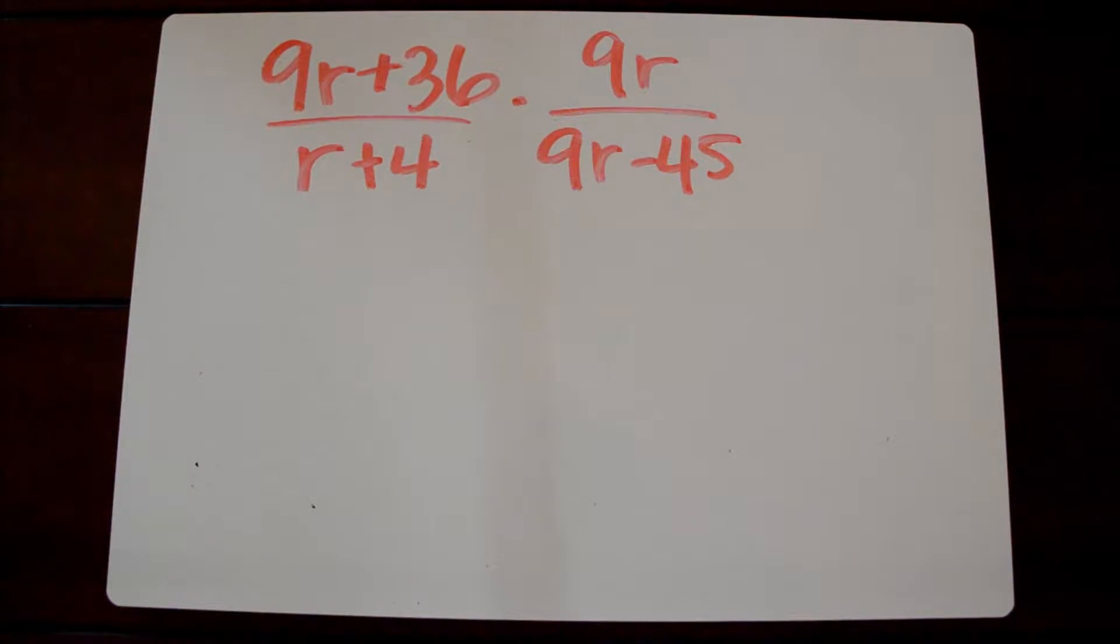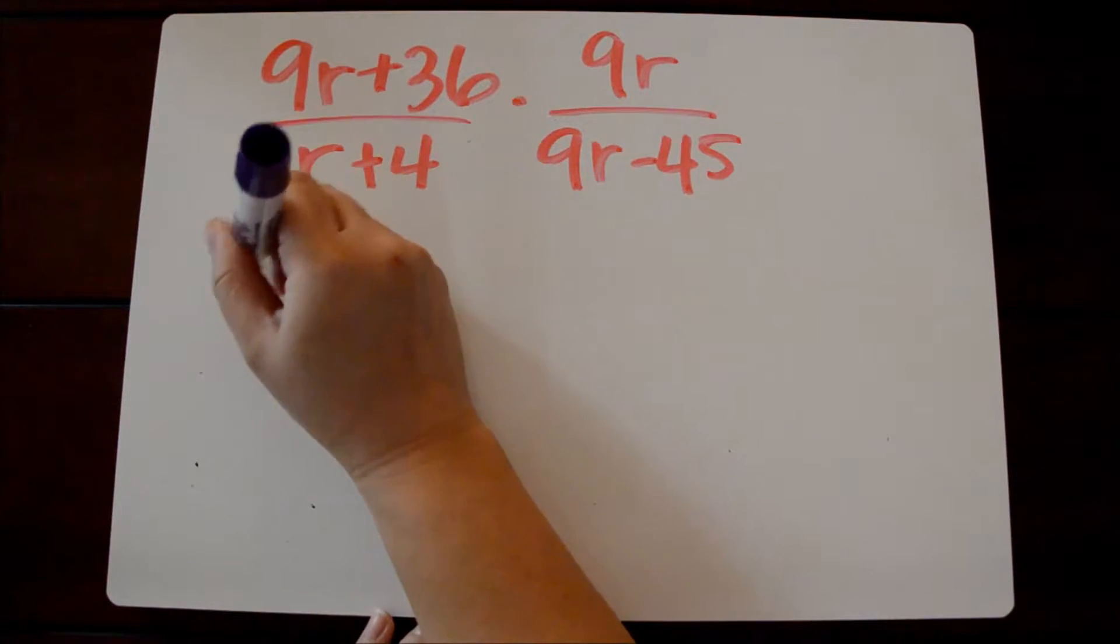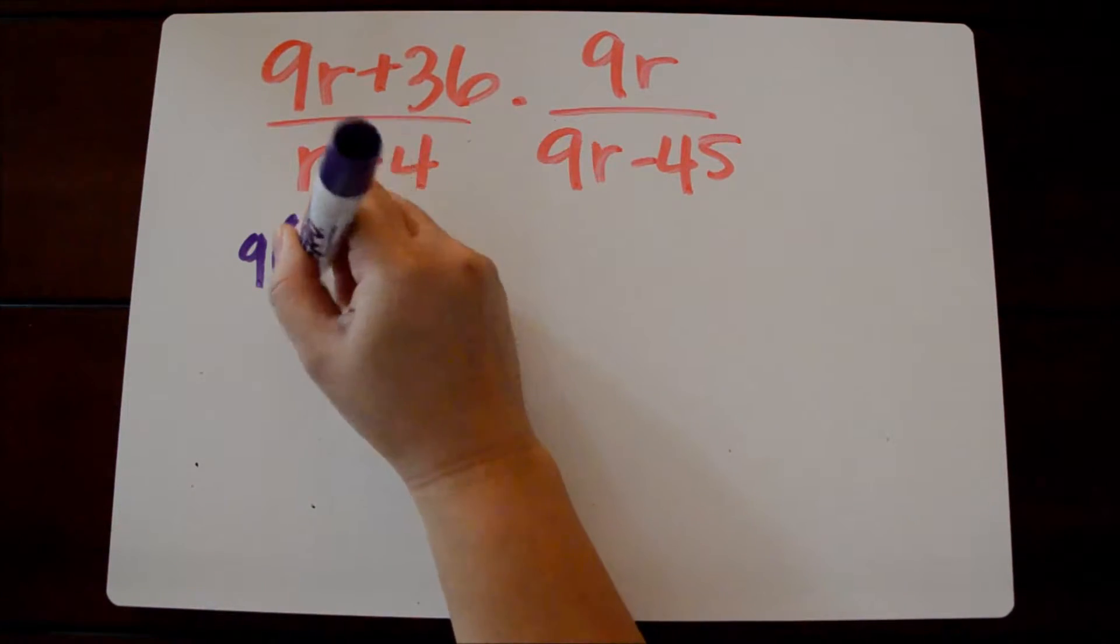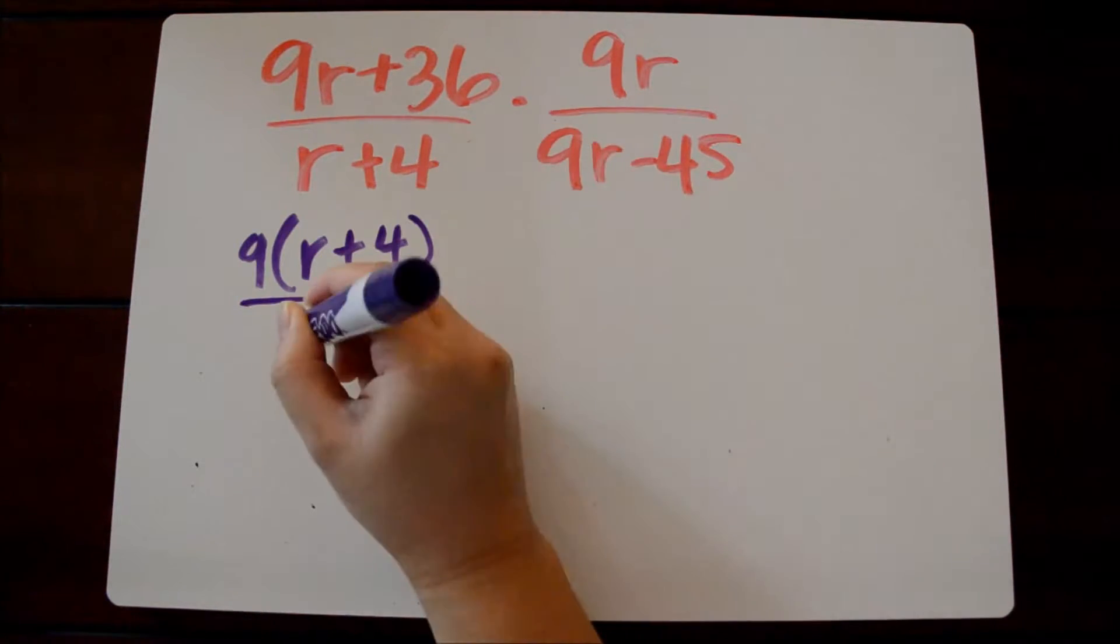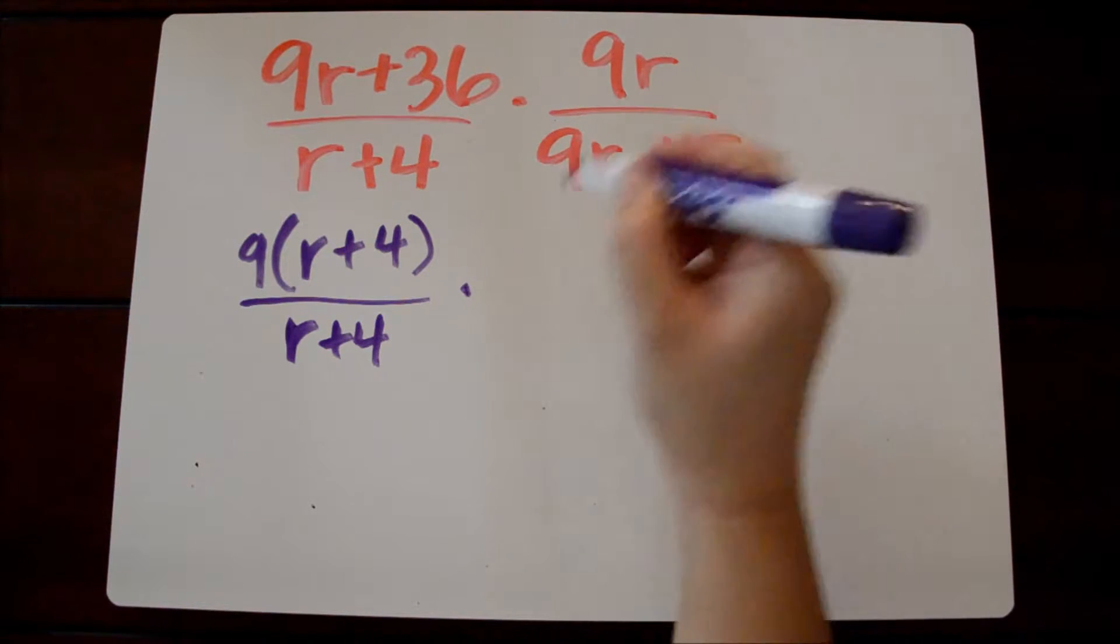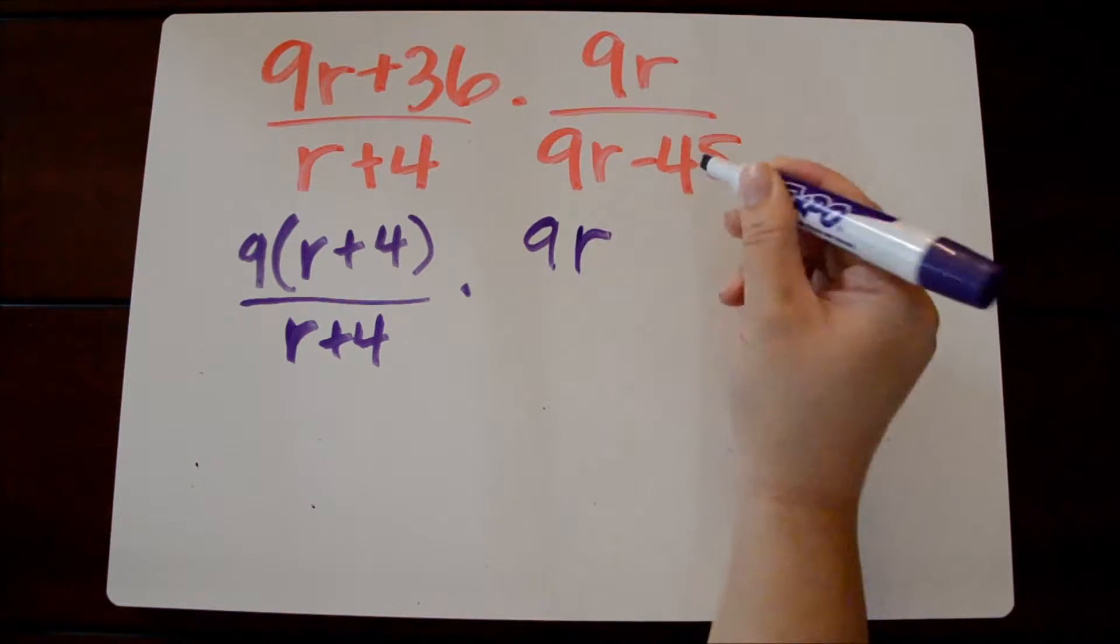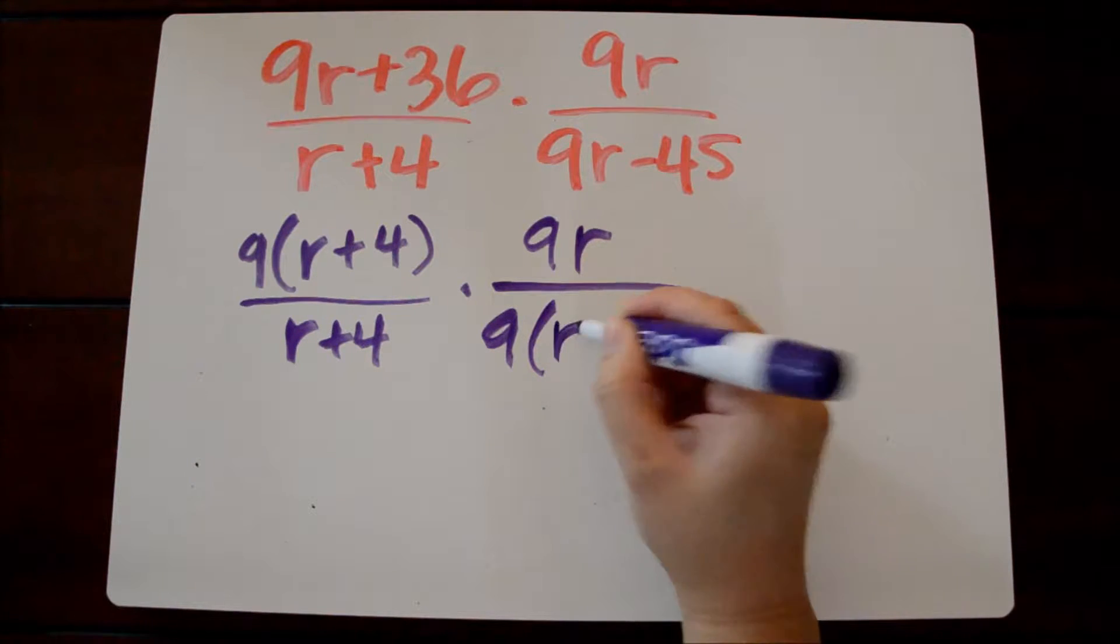The first step to multiplying rational expressions is to factor each expression if possible. In our first numerator we could factor out 9 and we're left with r plus 4. We can't factor the denominator so we'll leave that as r plus 4. Over here we cannot factor 9r but in the denominator we could factor out 9 and we're left with r minus 5.